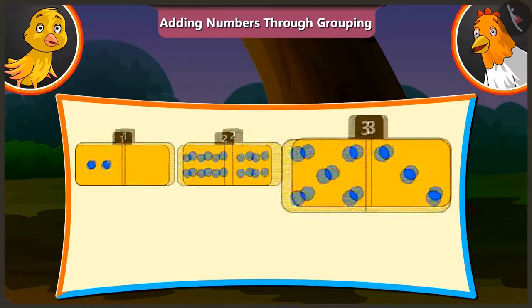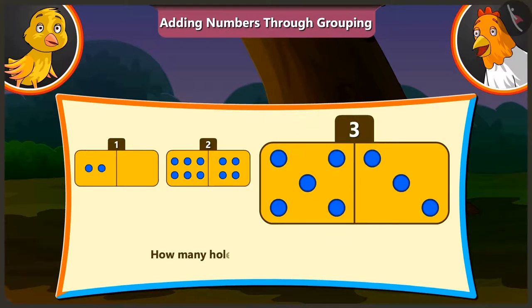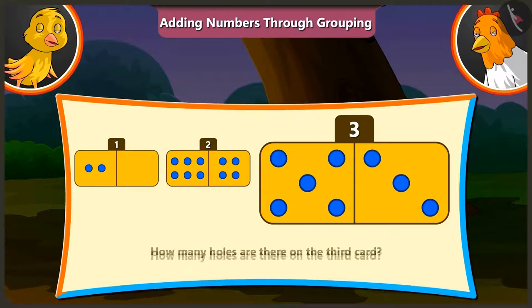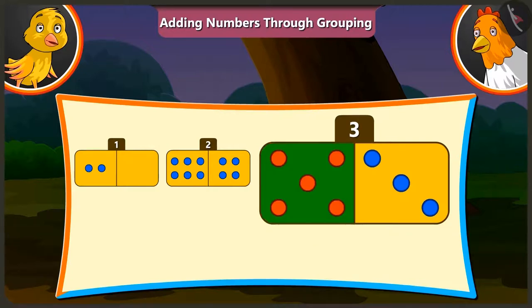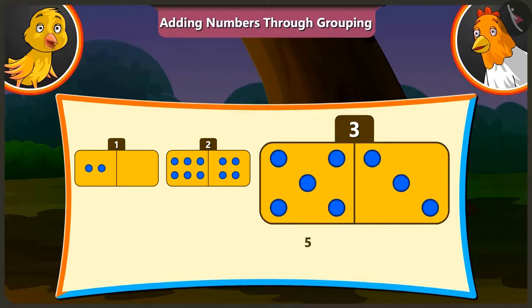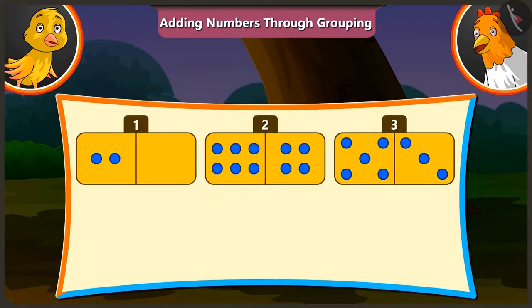Now tell me the number of holes on the third card. The third card has 5 and 3 holes. If we add 3 to 5, we get 8 holes. You are right.